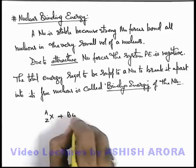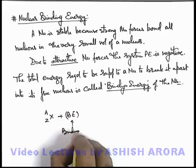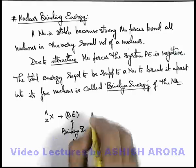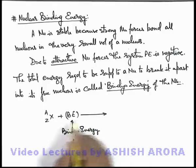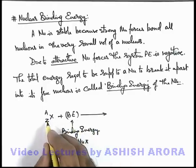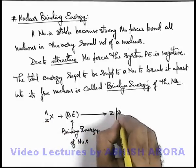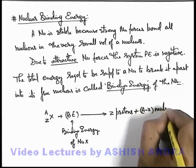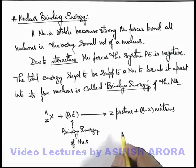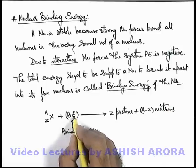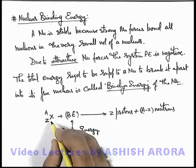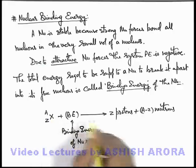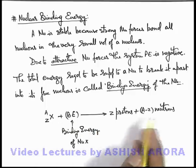So here we can write if there is a nucleus zXa which is having A number of nucleons, if we supply the binding energy of nucleus X to the system, then it will split into its constituent nucleons. In this situation if its atomic number is Z, that means there are total Z protons in it, plus there will be A minus Z neutrons in this nucleus. So we can say when binding energy is supplied to a nucleus, all the nucleons will become free and it splits into all its constituents.